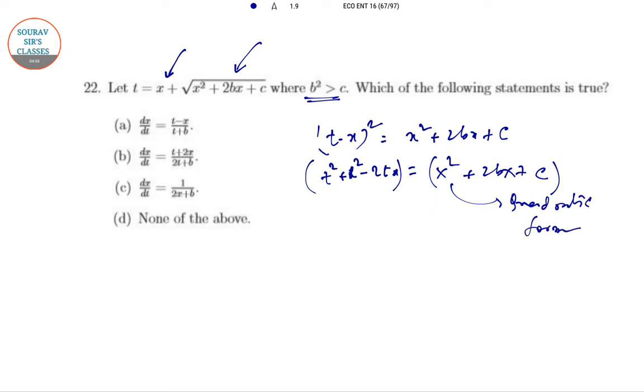Canceling x² from both sides: t² - 2tx = 2bx + c. To proceed, we need to differentiate the function to find the relationship.